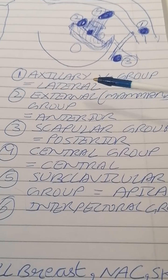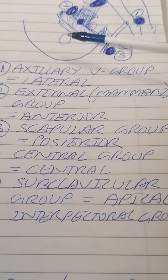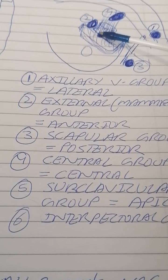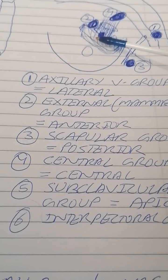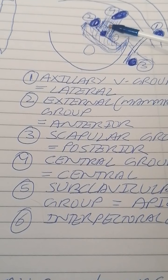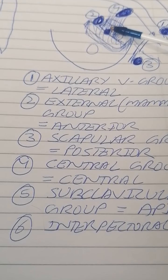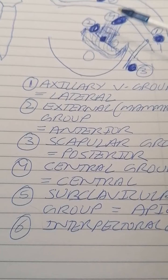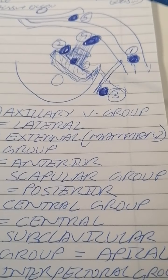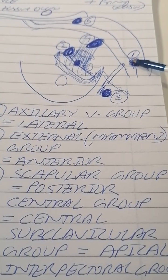The sixth and final group is the interpectoral group. Its location is between the pectoralis major and pectoralis minor muscles, and it receives drainage directly from the breast itself.